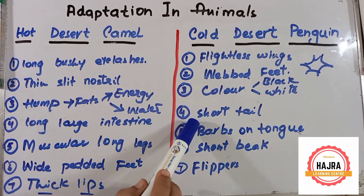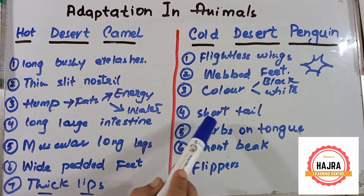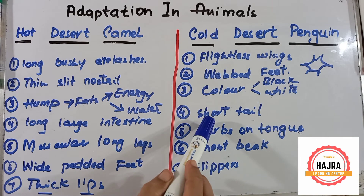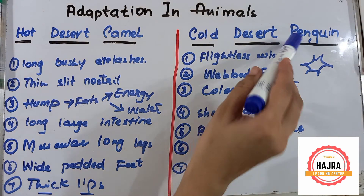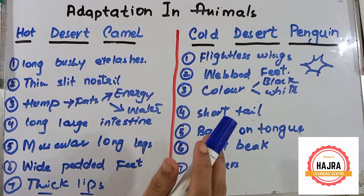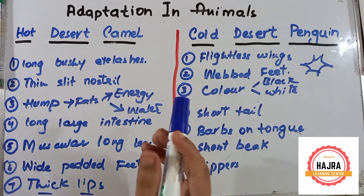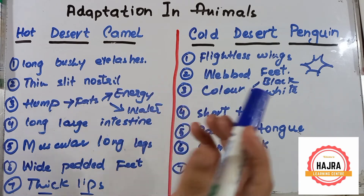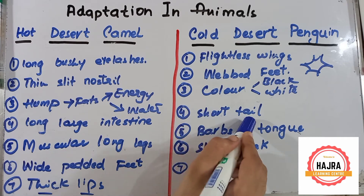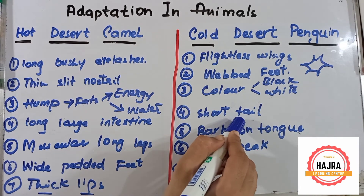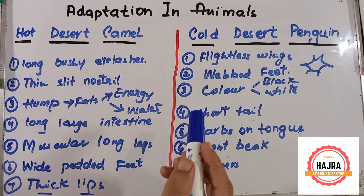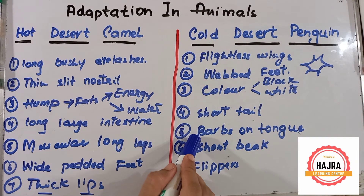Number four point: penguins have a short tail. The short tail helps the penguin maintain balance on the body during walking. We know that on land they walk, so the short tail helps to make the body balanced while walking.